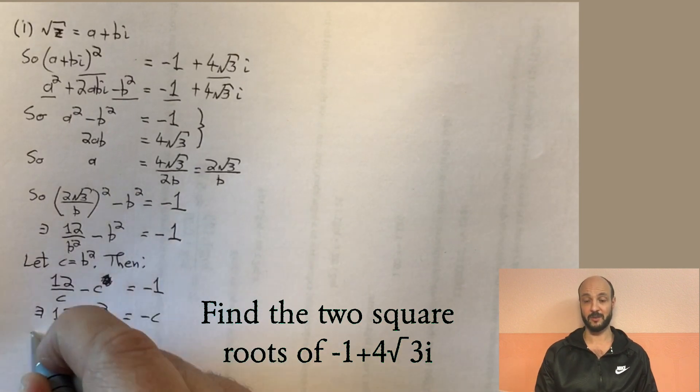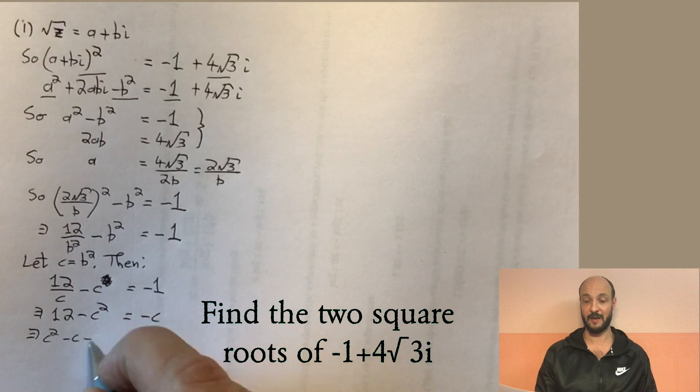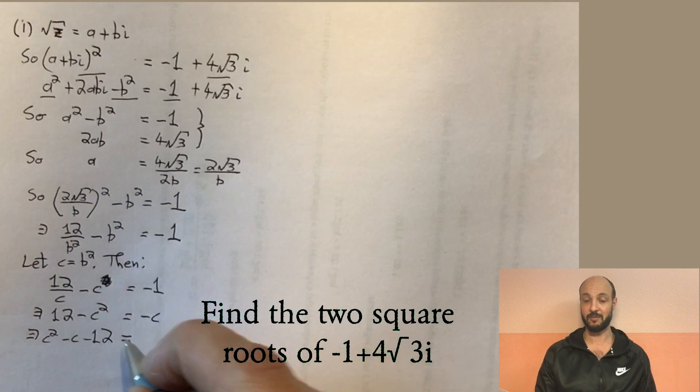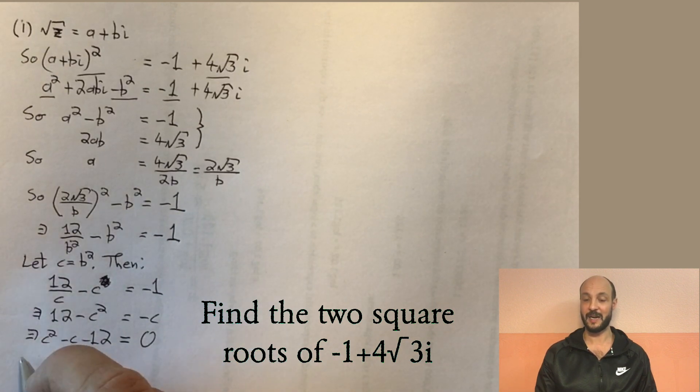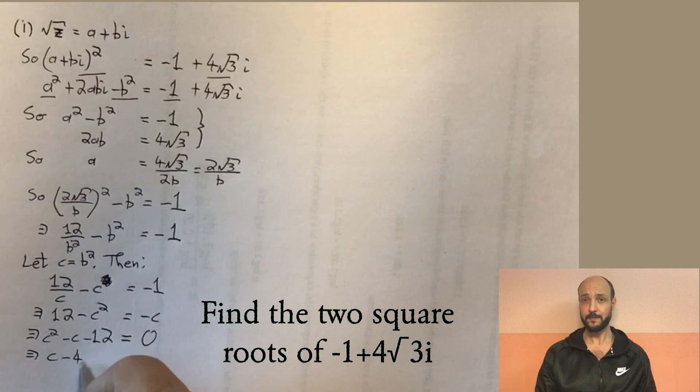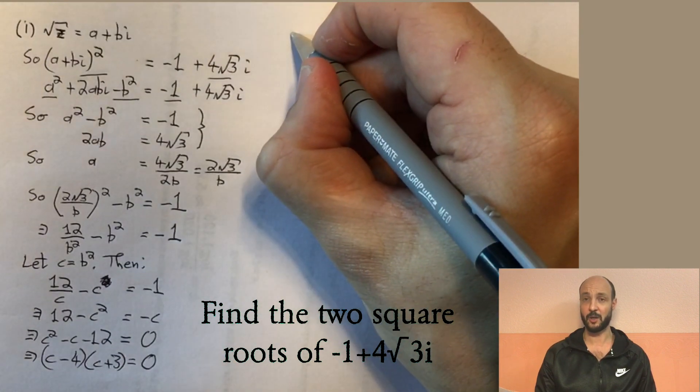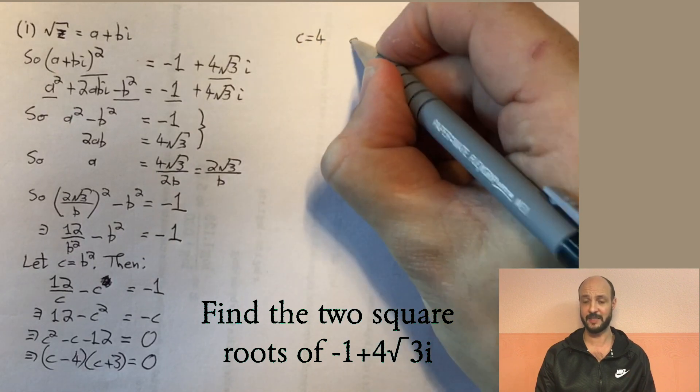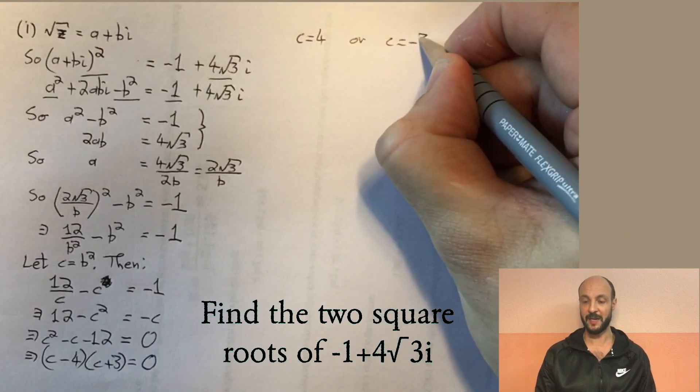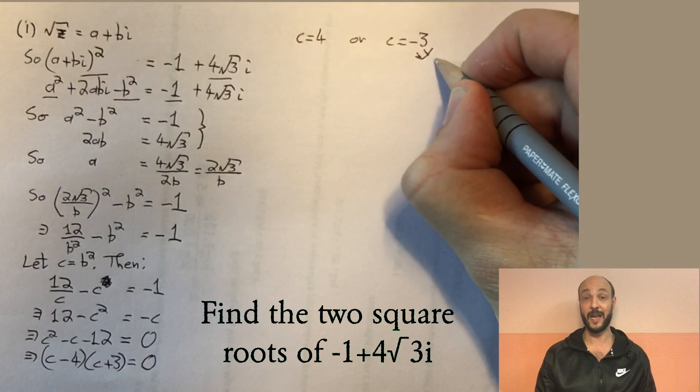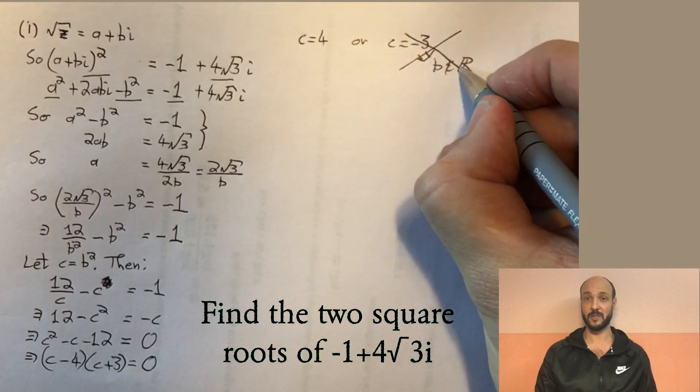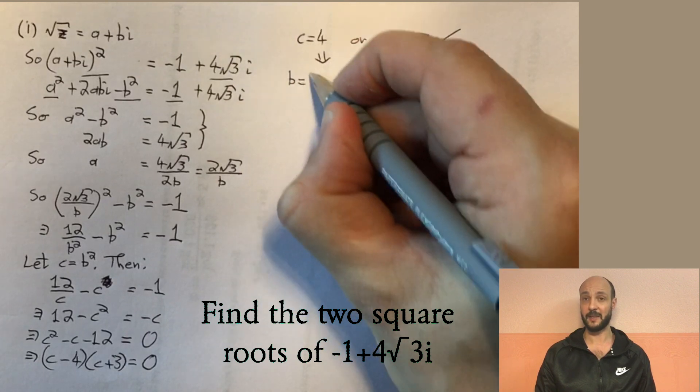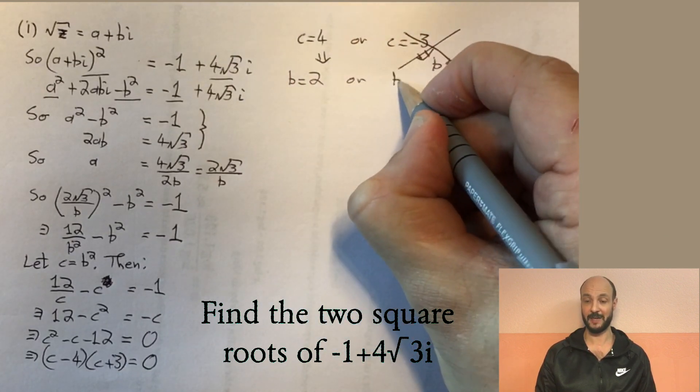If you can't spot the factors, you're welcome to use a quadratic formula. A lot of you will see here that we have c minus four and c plus three as our factorized form of this quadratic equation. So we know that c is equal to either four or minus three. Now we define c as b squared and b here is the imaginary part of a complex number. So this can't itself be imaginary. This is a real number. So if it's a real number, it can't have a negative square. So we reject our answer minus three and we keep only the answer c equals four, which tells us in order for b squared to equal four, b must be either two or minus two.